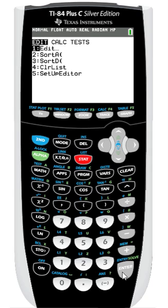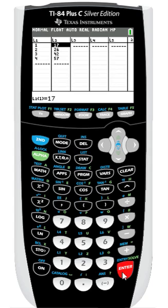Next, I'll press enter in the lower right corner of the keypad to view my points. In this case, I've got four data points: 1,17, 2,26, 3,42, and 4,57.